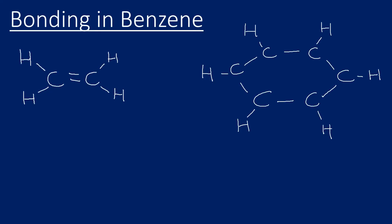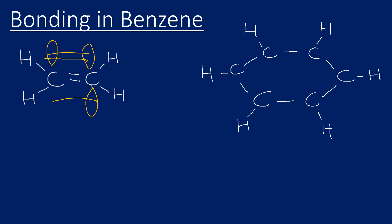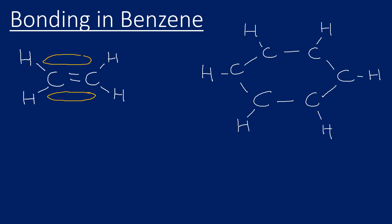Let's take a look at the bonding present in benzene. The bonding in benzene has some similarities to the bonding in an alkene. The double bond in an alkene involves the overlap of p orbitals — there are p orbitals on each carbon, and these p orbitals overlap, giving you a pi bond. You end up with a cloud of electrons above and below those two carbons, and there are two electrons in that pi bond.